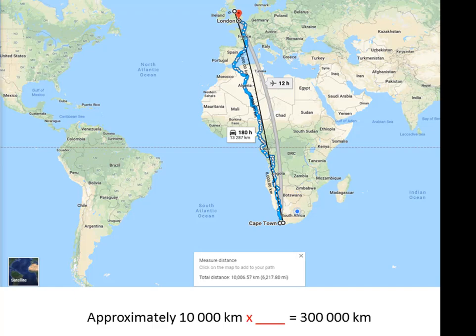So how much further is 300,000 kilometres than 10,000 kilometres? In other words, what must you multiply 10,000 by to get 300,000? I hope you said you must multiply it by 30. So if you want to travel 300,000 kilometres, you must go from Cape Town to London 30 times, or put another way, from Cape Town to London and back again 15 times. Then you will have travelled approximately 300,000 kilometres.